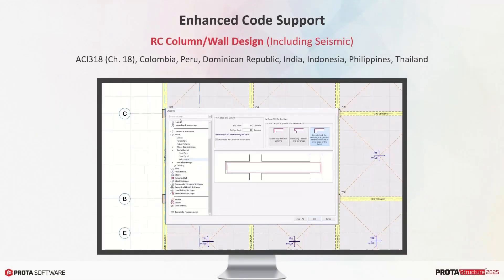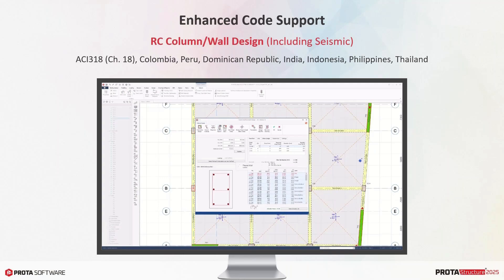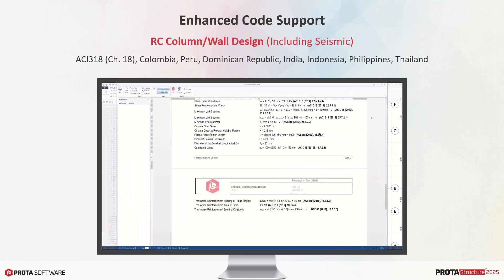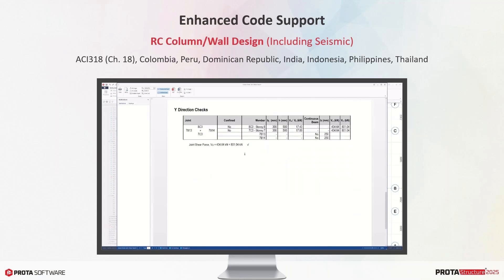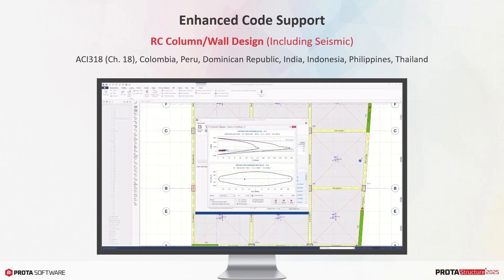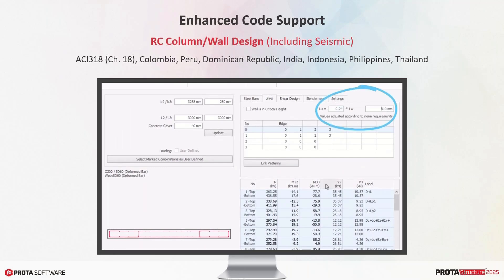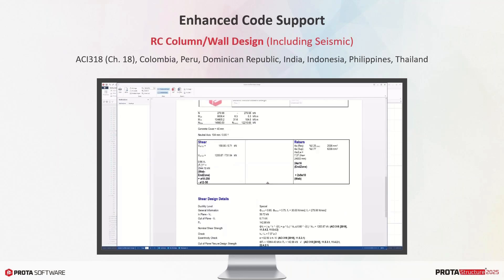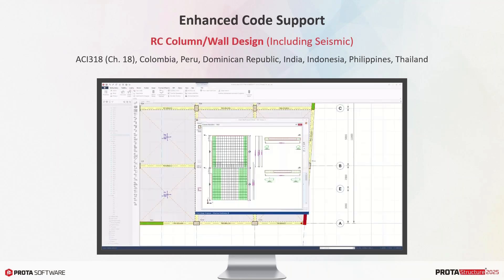We focused on reinforced concrete column and wall design, including seismic clauses. Protostructure 2025 is more capable in supporting seismic design provisions such as ACI 318, especially Chapter 18. Codes similar to US codes — Colombia, Peru, Dominican Republic, Indonesia, Philippines, and Thailand — are also covered in terms of column and wall design. India is also covered in the new version. Advanced seismic analysis and design technology ensures compliance with these demanding codes, with automatic checks for irregularities, for example.